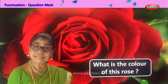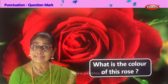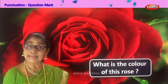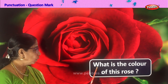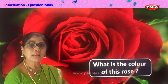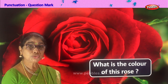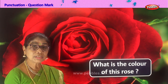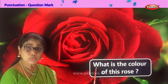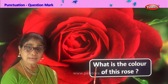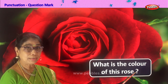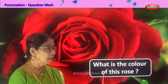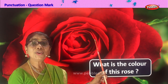Let's read the sentence and put the question mark at the end, because this sentence is asking a question. What is the color of this rose? The first word begins with a capital letter. The question ends with a punctuation question mark. What is the color of this rose? Red.